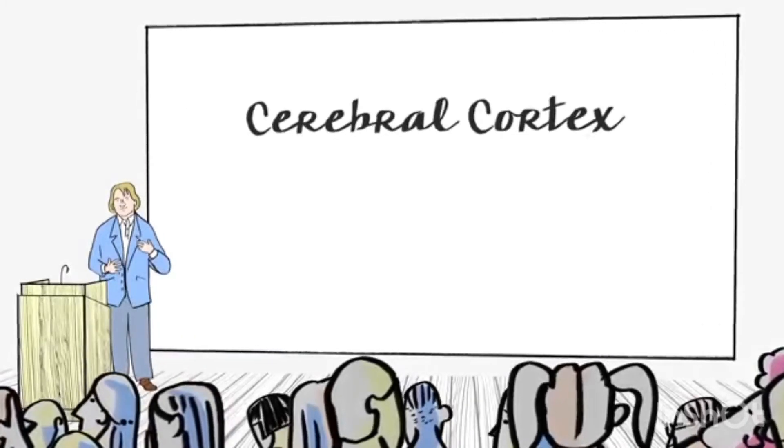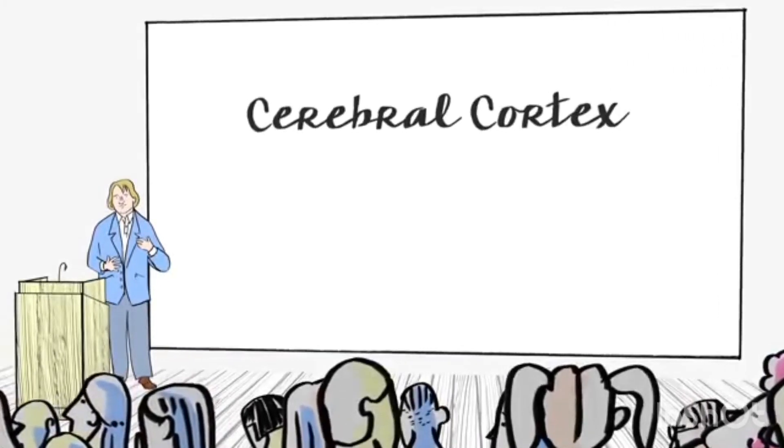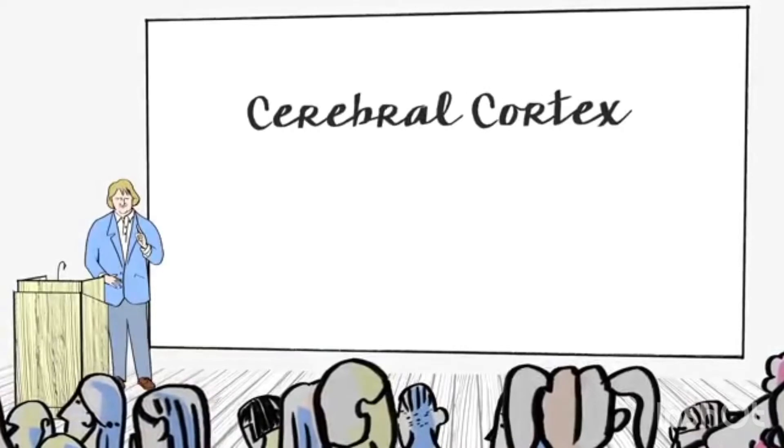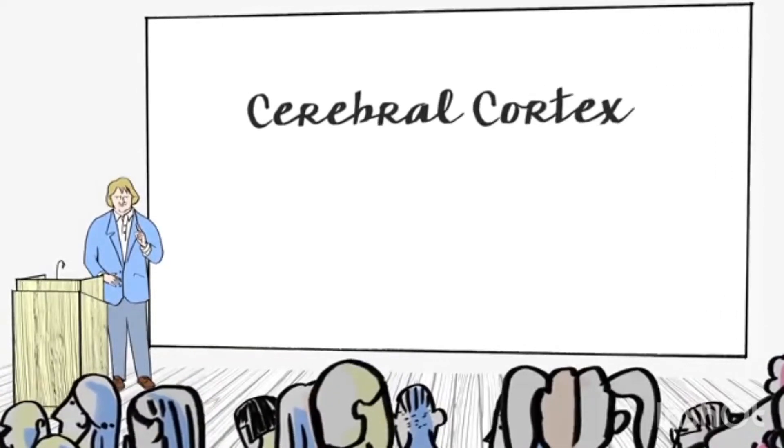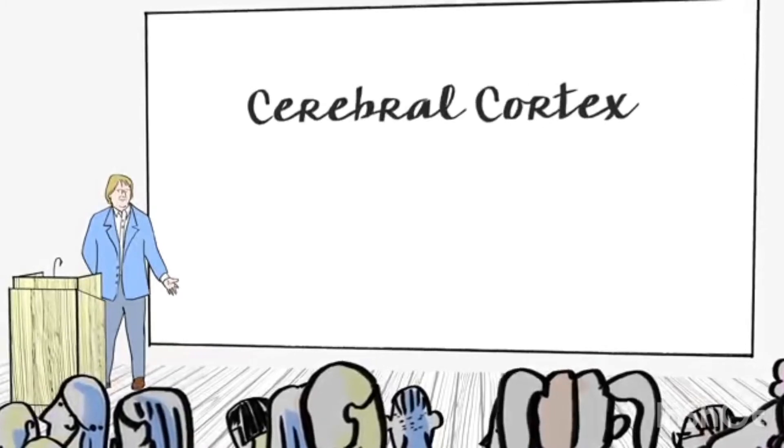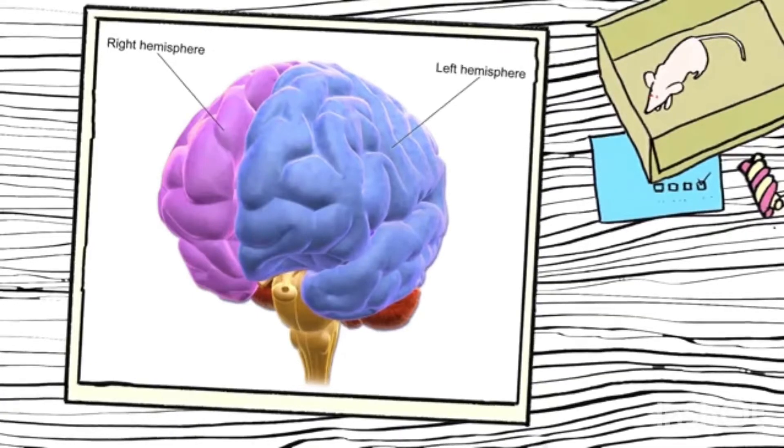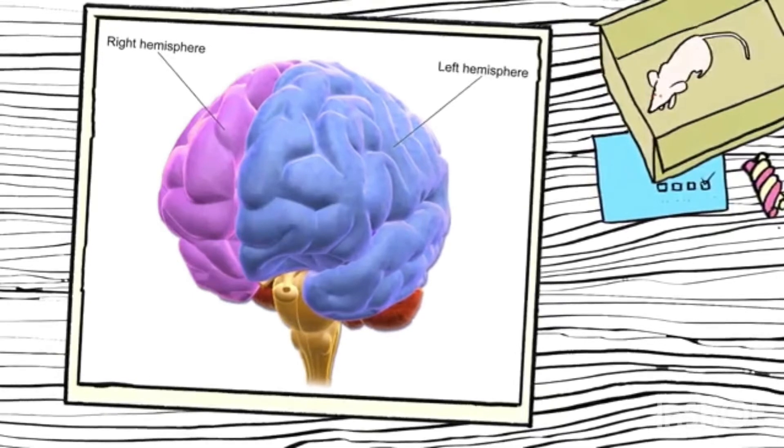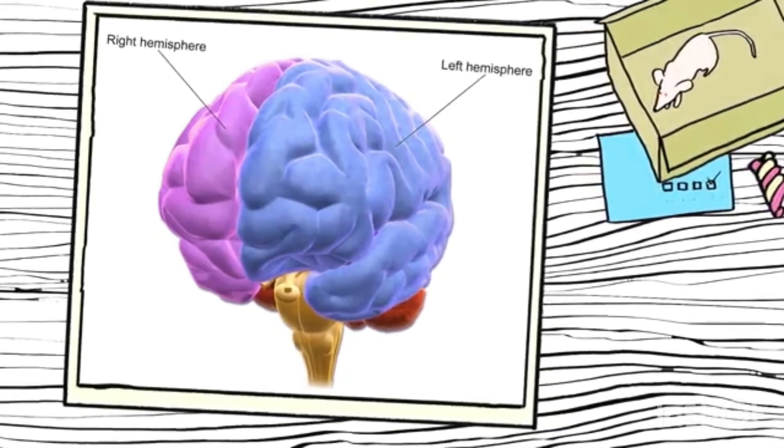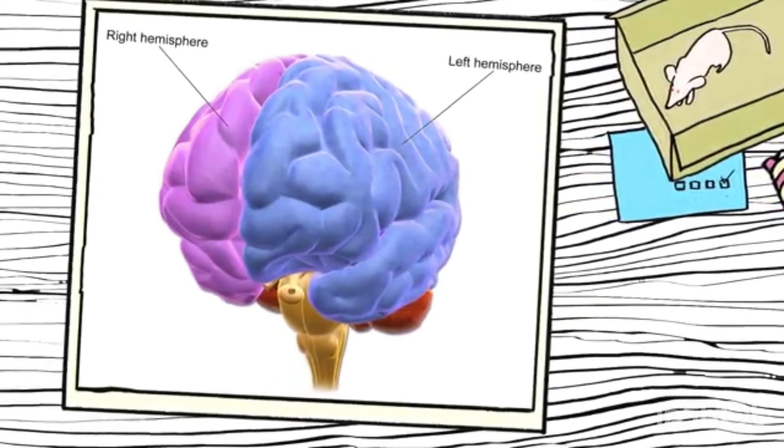Going from your forehead and sweeping to the back, you have the frontal lobe, the parietal lobe, the occipital lobe, and the temporal lobe. Each of those lobes does different things which we'll talk about in a bit.